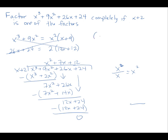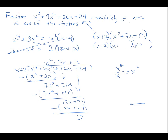So we know: (x + 2) times (x² + 7x + 12) gets us back to x³ + 9x² + 26x + 24. It says factor completely, and we can factor the trinomial into two binomials: two numbers that multiply to 12 and add to 7 are 3 and 4. So we have (x + 2)(x + 3)(x + 4). We've factored completely and confirmed that x + 2 is one of its factors. That's it for this lecture — until next time!